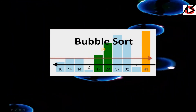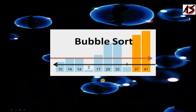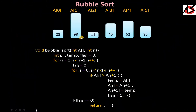Let's see how bubble sort works. We have an array 'a' with 6 elements, indexed from 0 to 5, containing random numbers that we want to sort. We will be making a function in which we are passing the array and the number of elements n, then sorting the elements using this code.